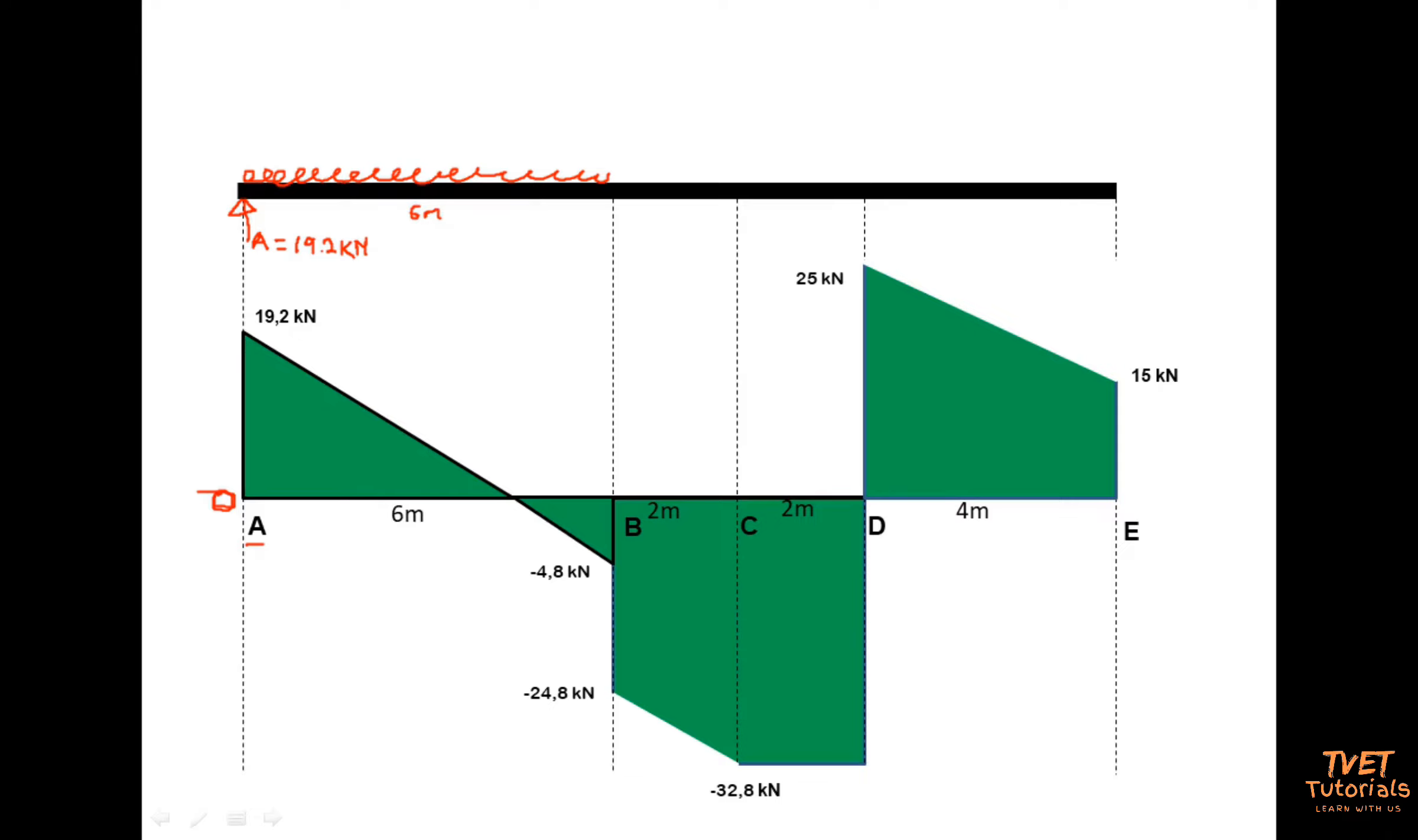So now we say how did they draw this shear force diagram. In order to calculate the principal points from the intercept of 19.2, in order to calculate this 4.8, the calculation said 19.2 is my starting point minus the scale of the UTL. I'll call it x now. It's what is missing. Times the spread of the UTL. And the spread is 6 meters. And that gave us an answer of negative 4.8.